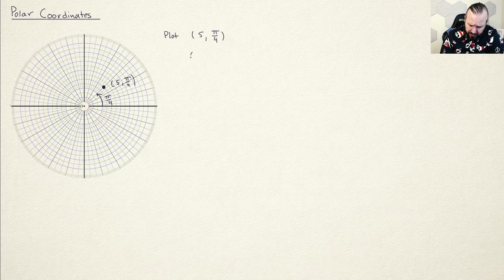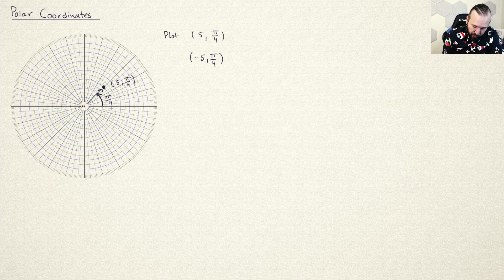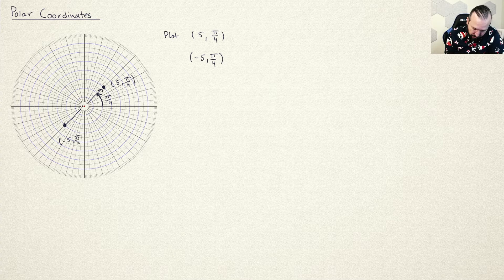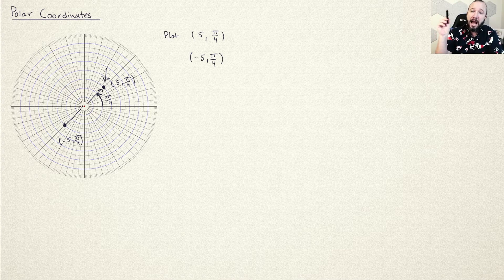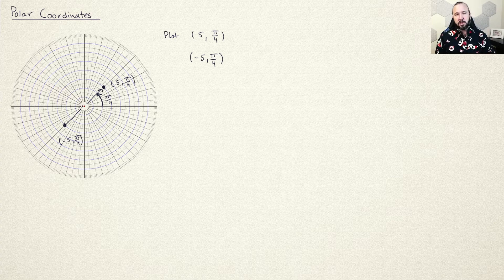Just to be clear, let me explain what it means when you plot negative 5 comma pi over 4. What that means is you still open the same angle, pi over 4, but then instead of going away from the origin out along that line, you go the opposite direction — 1, 2, 3, 4, 5. So over here is the point negative 5 comma pi over 4. You could also get to this location by going out the angle you want and then 180 degrees in the opposite direction.